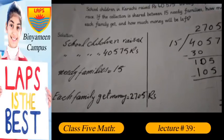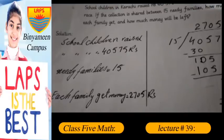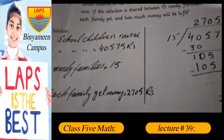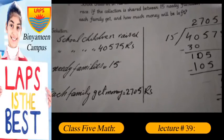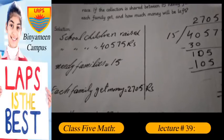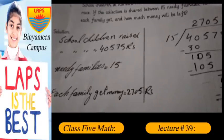40,575 rupees, needy families 15. Each family gets 2,705 rupees. 2,705 rupees each family gets, nothing left.